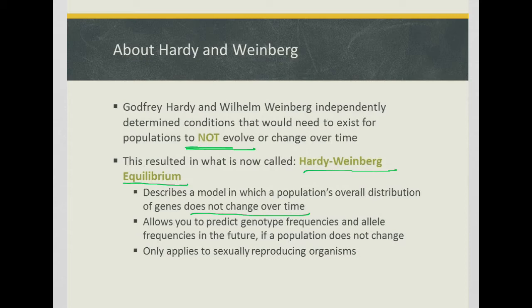For example, if there are five homozygous dominant individuals out of ten, that's 50%, then 50% of the next population would also be homozygous dominant. Hardy-Weinberg allows you to predict genotype frequencies — so the percentage of homozygous dominant, homozygous recessive, etc. — and also allele frequencies, such as the frequency of the dominant or recessive allele. It allows you to predict these frequencies in the future, assuming the population does not change.